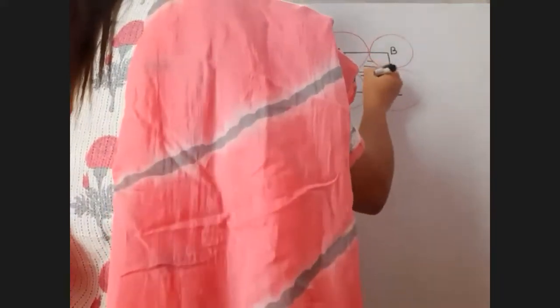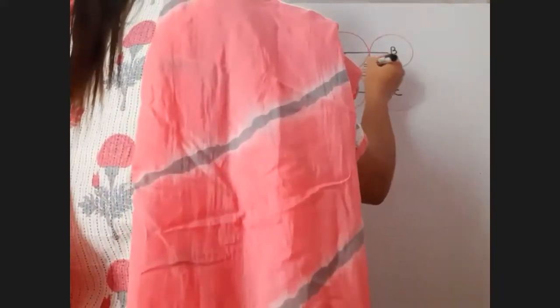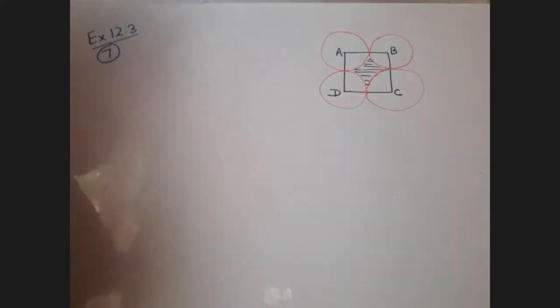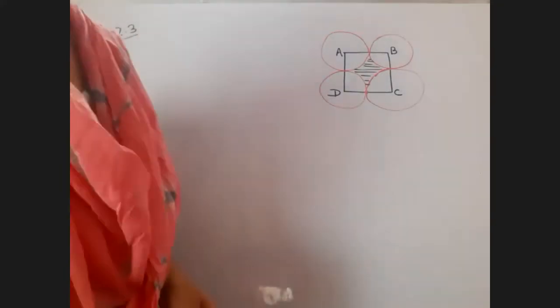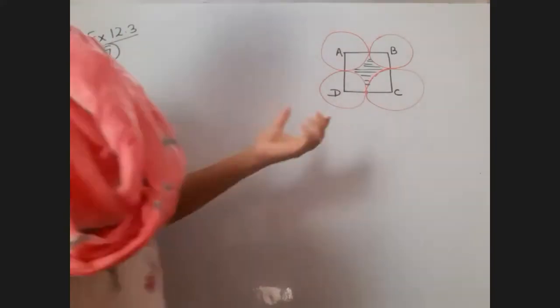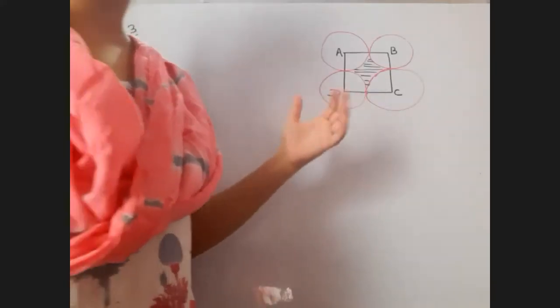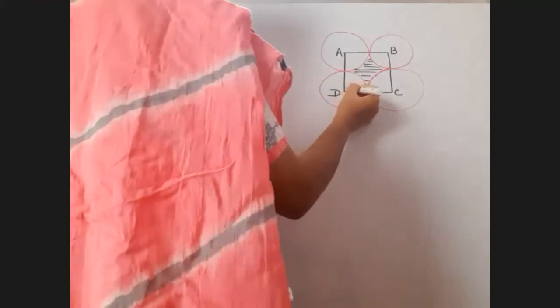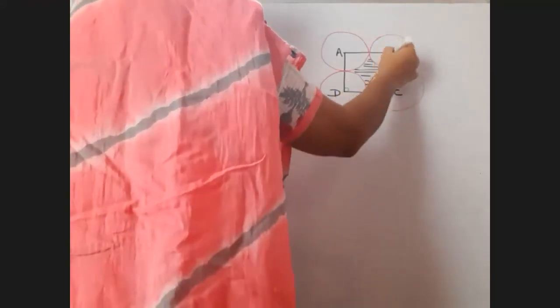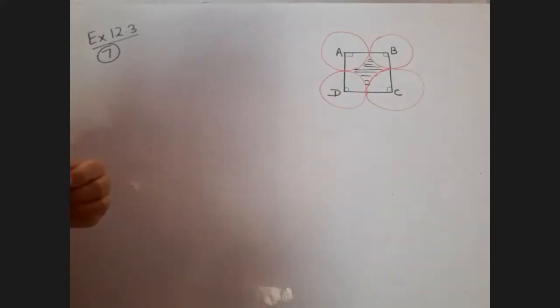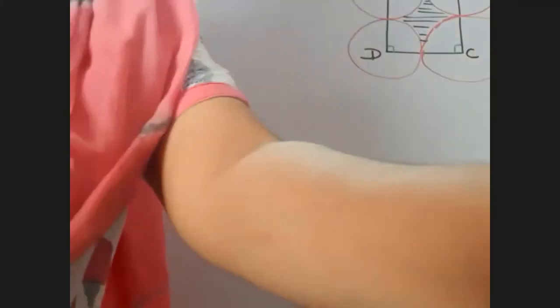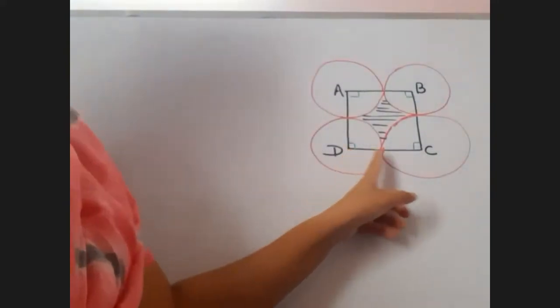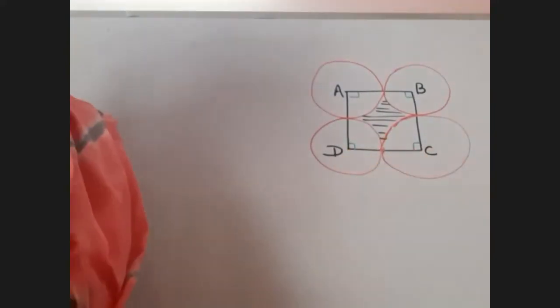Then, this portion is being shaded. So, we have to find the area of the shaded region. First of all, let us see. What is the significance of giving it to be a square? Why are we given that it is a square? Being a square, each of this angle is a 90 degree angle. So, a part of a circle which is made at 90 degree is called quadrant.